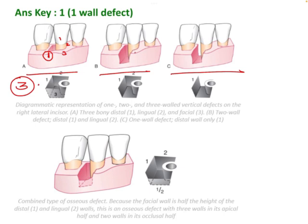In the second image, 2 walls are present and 2 walls are missing — so this is a 2-wall defect. In the third image, only 1 wall is present and the others are missing, so this is a 1-wall defect. We have to count the number of walls present. That is why 1-wall defect is the correct answer.